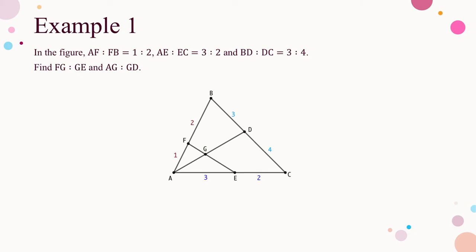Let me introduce the structure and techniques through examples. In the figure of example 1, the numbers represent the ratio on the sides. Given three pairs of ratios, we look for the ratios on the line segments EF and AD. The line segment AD is drawn from vertex A, and the other line segment EF has endpoints on the sides AB and AC. Before using mass point, pause the video and work out the solution with the method you learned from school, so you have a comparison with the mass point solution later.